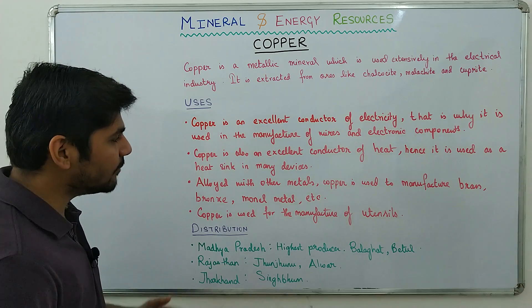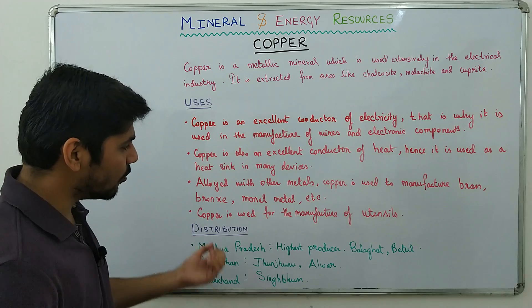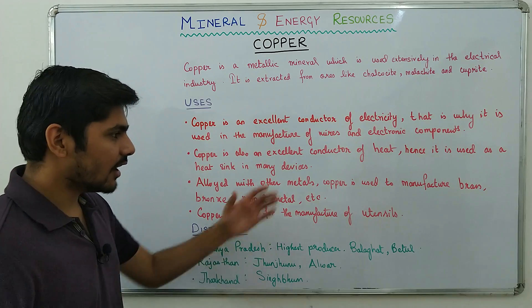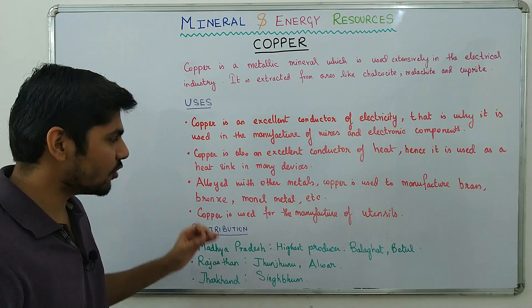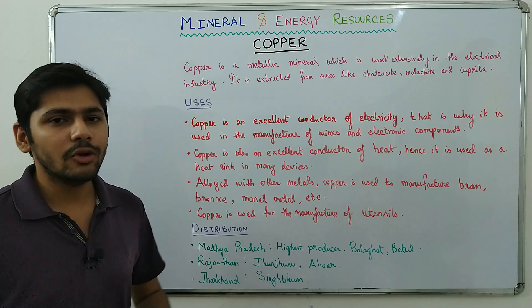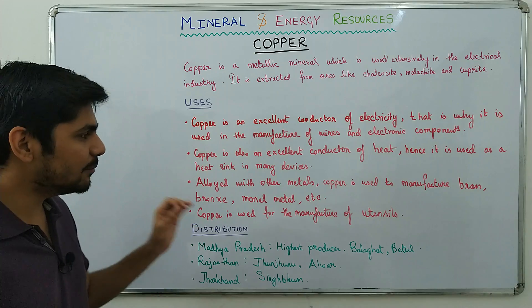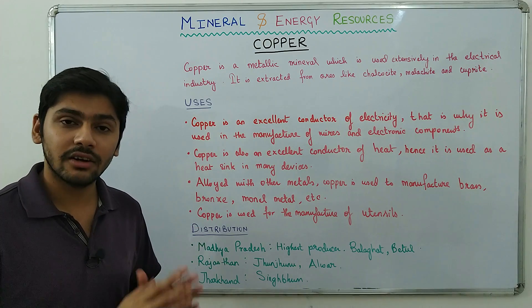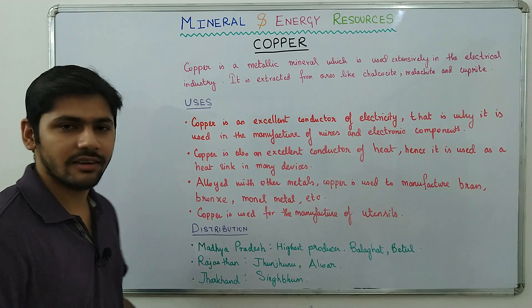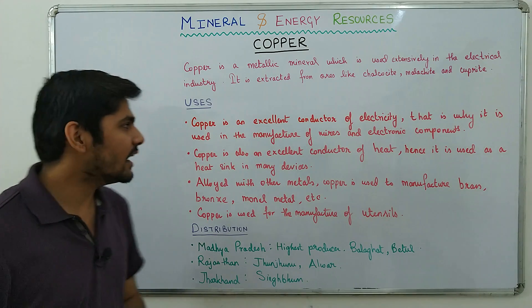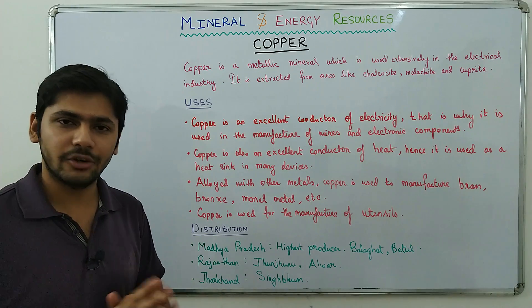Alloyed with other metals, copper is used to manufacture brass, bronze, monel metal, and other alloys, which are used for utensils, pipes, and many other things. Copper is also directly used for the manufacture of utensils. These were the main uses of copper, though there are many other uses as well.